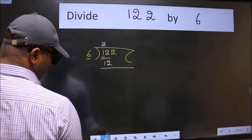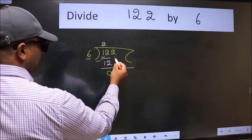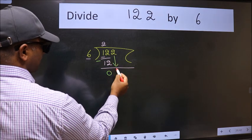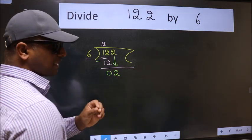Now we should subtract. We get 0. After this, bring down the next number, so 2 comes down. After this step, the mistake happens.